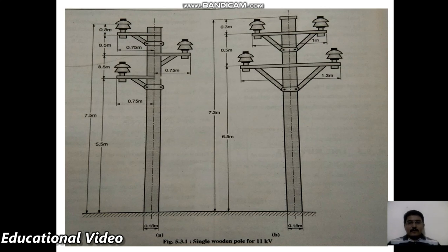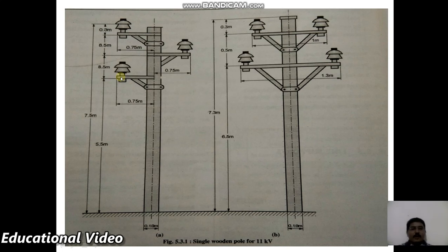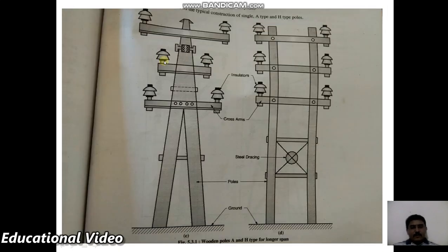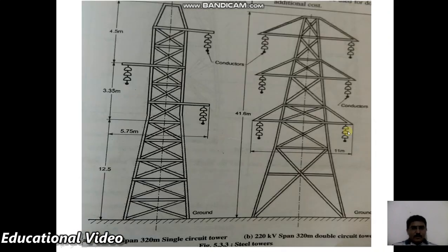In the single wooden pole diagram, we can clearly observe that the pin insulator is placed at the top of the pole, and the cross arm is also visible. The H-type wooden pole has a structure that looks like the letter 'A' and 'H'. This is also the picture view of a steel tower.